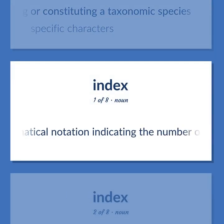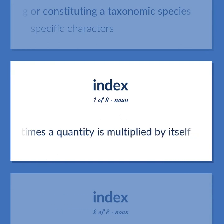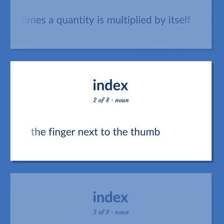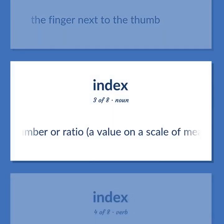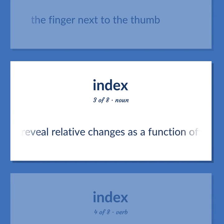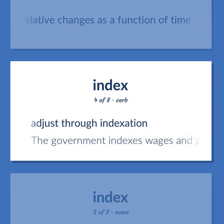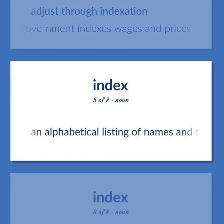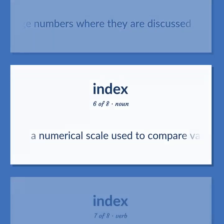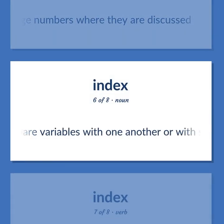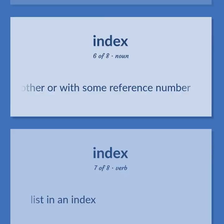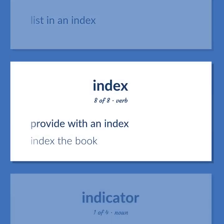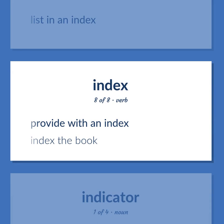Index: A mathematical notation indicating the number of times a quantity is multiplied by itself. The finger next to the thumb. A number or ratio; a value on a scale of measurement derived from a series of observed facts that can reveal relative changes as a function of time. Adjust through indexation — the government indexes wages and prices. An alphabetical listing of names and topics along with page numbers where they are discussed. A numerical scale used to compare variables with one another or with some reference number. List in an index; provide with an index — index the book.